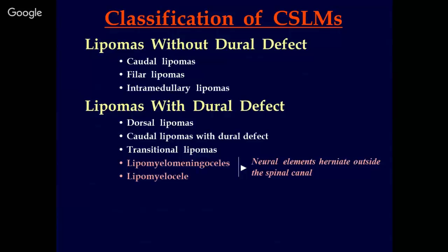If you notice, the first three subtypes — dorsal lipomas, caudal lipomas with dural defect, and transitional lipomas — are colored differently because in these three subtypes the lipoma-cord interface lies within the spinal canal. There is no herniation of neural tissue outside the spinal canal. Whereas in the last two subtypes — lipomyelomeningocele and lipomyelocele — the neural elements herniate outside the spinal canal and the lipoma-cord interface lies outside the spinal canal. These two subgroups differ from one another in embryology, clinical presentation, surgical findings, and prognosis.